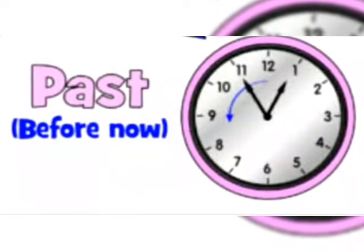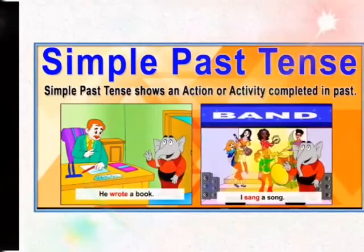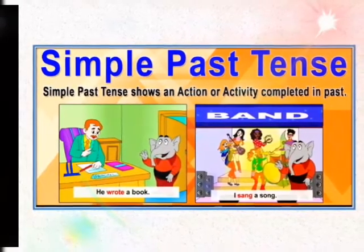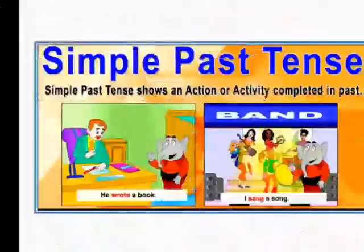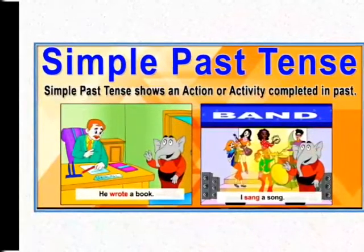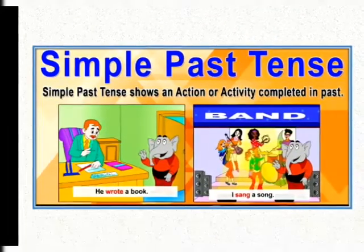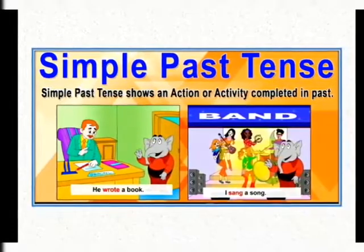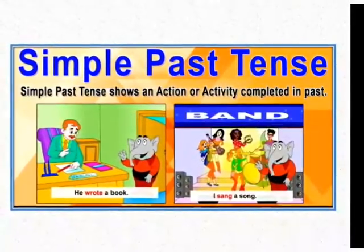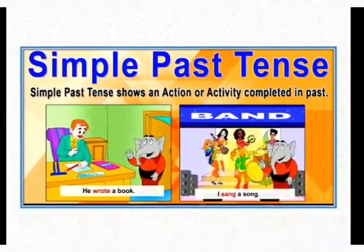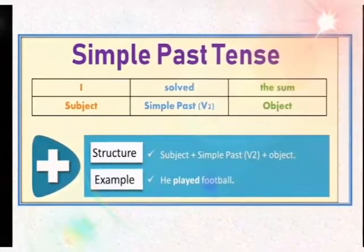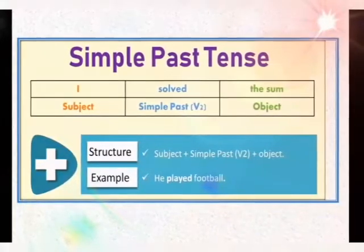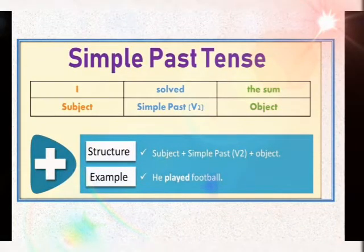Now, simple past tense. Past means the time which has gone. Simple past tense shows an action or activity completed in the past — which has been started in the past and completed in the past. For example: 'He wrote a book' — the verb is 'wrote.' 'I sang a song' — the verb is 'sang.' Have you noticed the similarity between 'wrote' and 'sang'? These are both the second form of their verbs — 'wrote' is the second form of 'write' and 'sang' is the second form of 'sing.' The rule of simple past tense is: subject plus verb second form plus object.